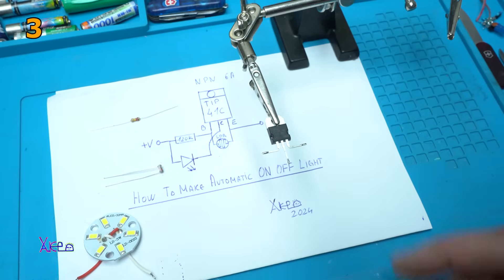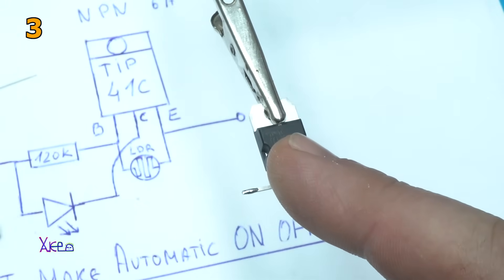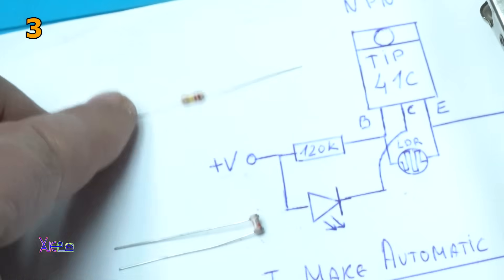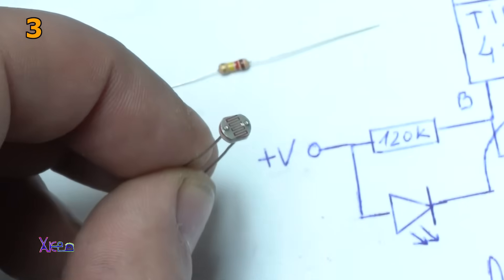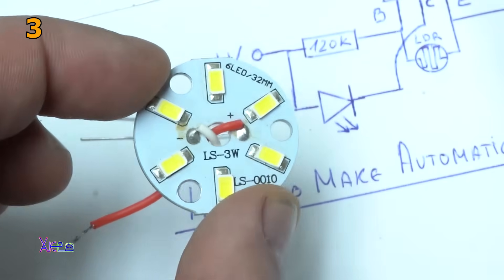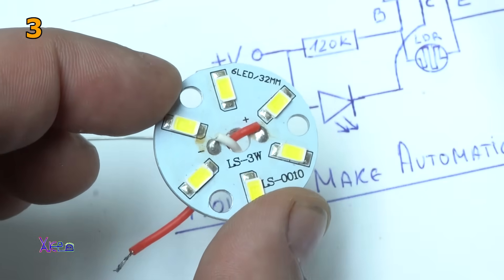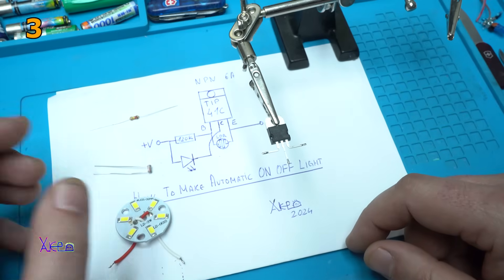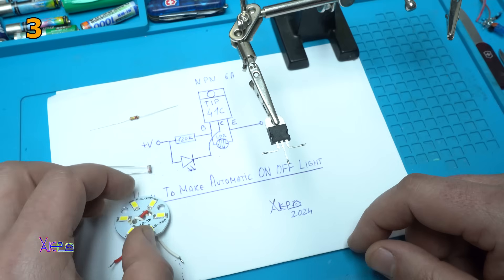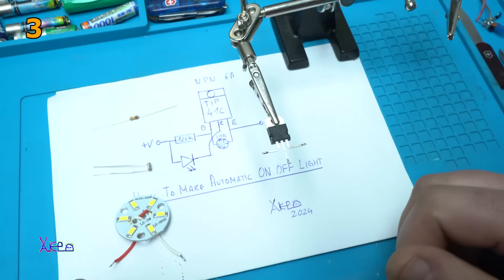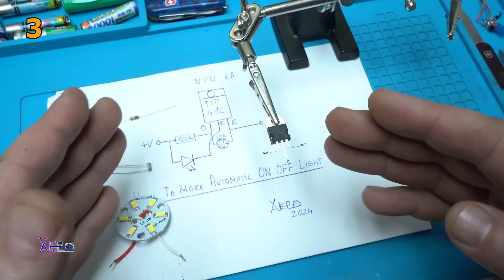As I told you, you'll need only one NPN transistor. In this case I'm using TIP41C, it's a six ampere transistor, one resistor of 120 kilo-ohm, this is a photo resistor LDR, and I'm using this LED light which can work on 12 volts. So this circuit is for 12 volts, but you can run it from around six volts maximum I think 20 or 24 volts. Okay, let's now solder all the components, all three of them.